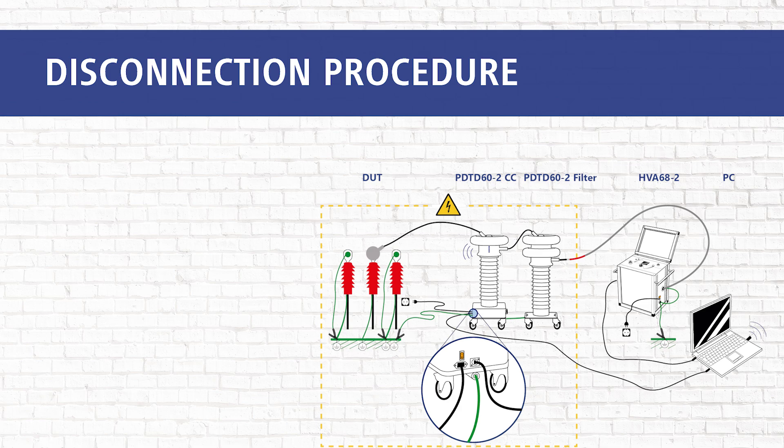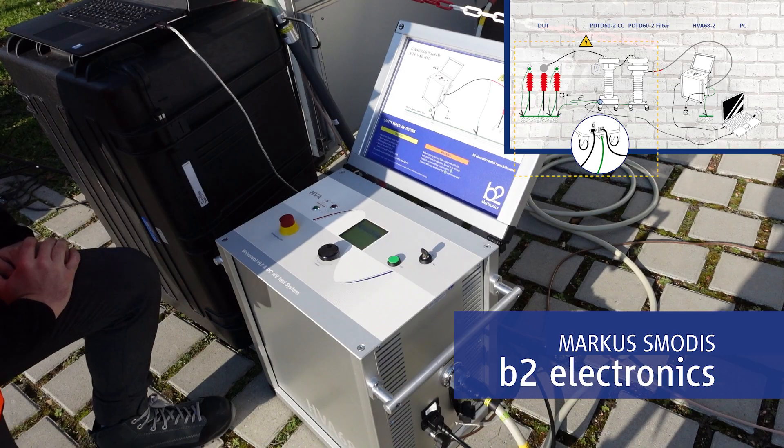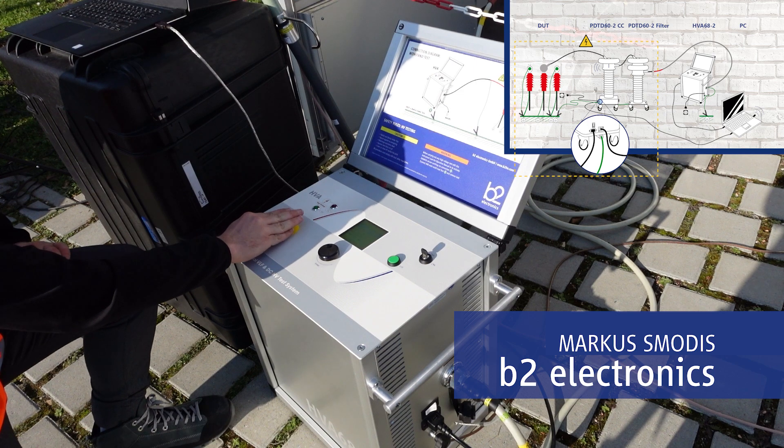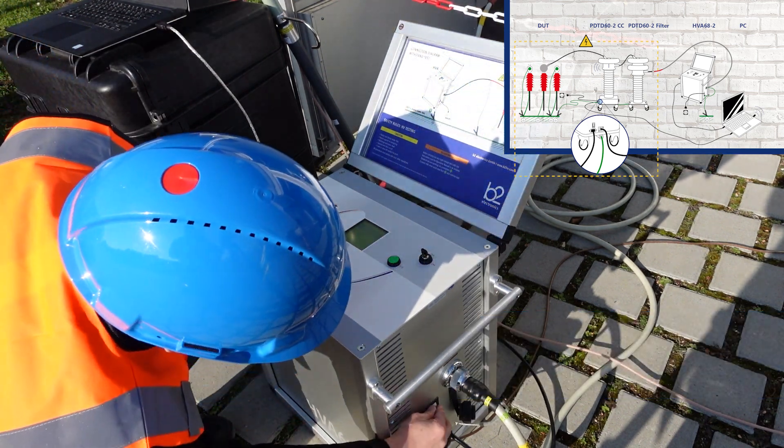In the first step we perform the following points. We switch off the units. First we press the HVA emergency off button, then the HVA main switch.